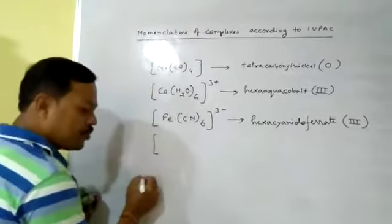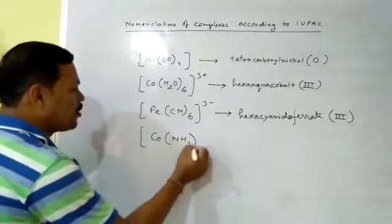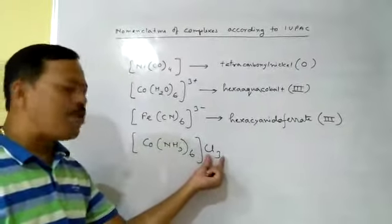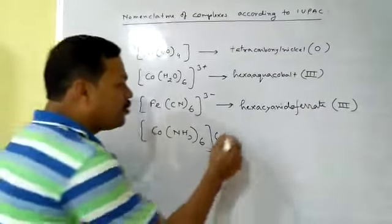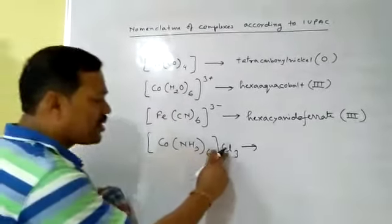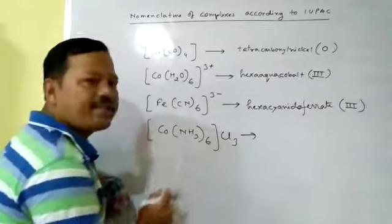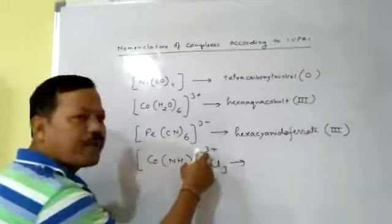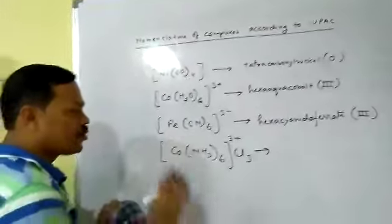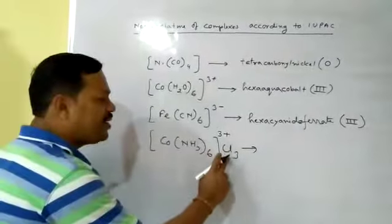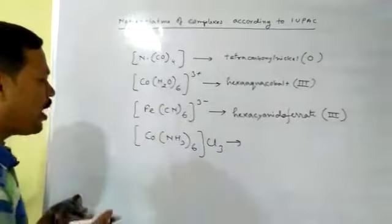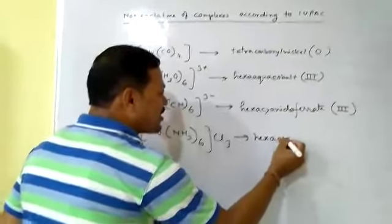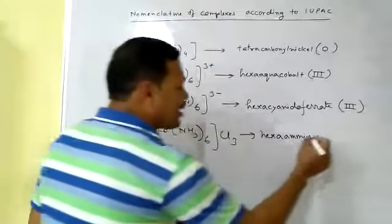Now consider another complex: [Co(NH₃)₆]Cl₃. This type of complex is called a salt-like complex — a counter ion is added. The counter ion here is Cl⁻; 3 Cl⁻ are joined. This counter ion is not part of the complex — it is outside the square bracket just to neutralize the charge. Originally, outside the square bracket it has 3+ charge, and to neutralize that, 3 Cl⁻ is added. So this is a cationic complex with an anionic counter ion. The ligand is NH₃, called amine. There are 6 NH₃, so hexaamine. The metal is cobalt, giving hexaaminecobalt.